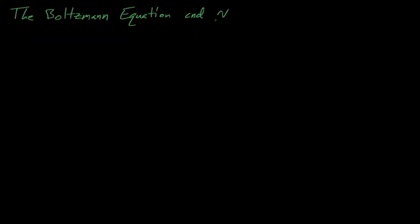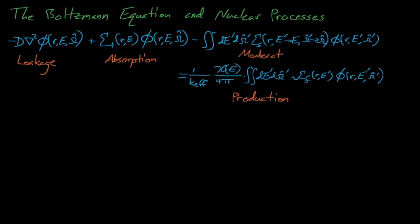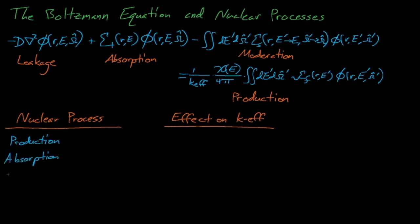Our old friend, the diffusion approximation to the Boltzmann transport equation, contains four main terms: the neutron leakage term, the neutron absorption term, the neutron production term, and the scattering source term, which can also be thought of as describing neutron moderation effects. If you don't have the Boltzmann transport equation memorized but would like to memorize these processes, the PALM acronym is actually pretty easy to remember and pretty useful.